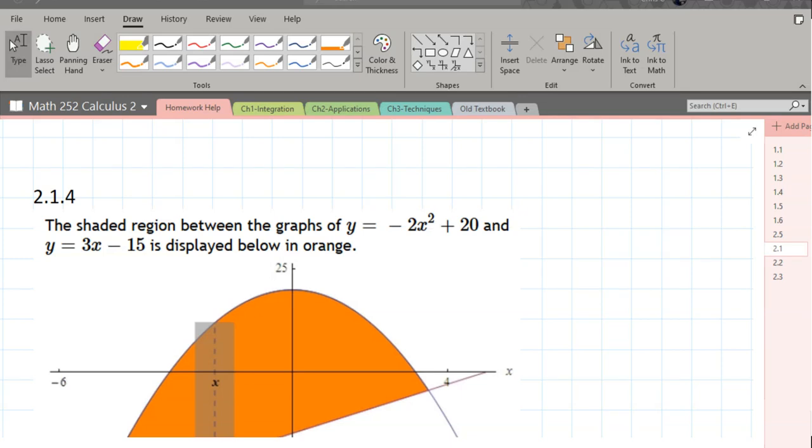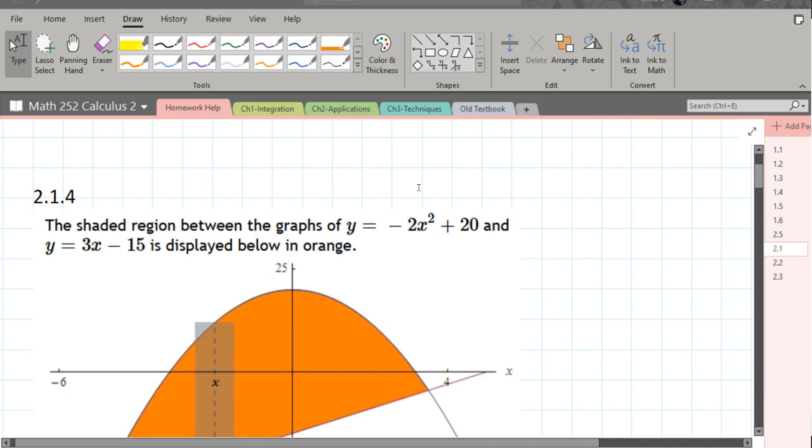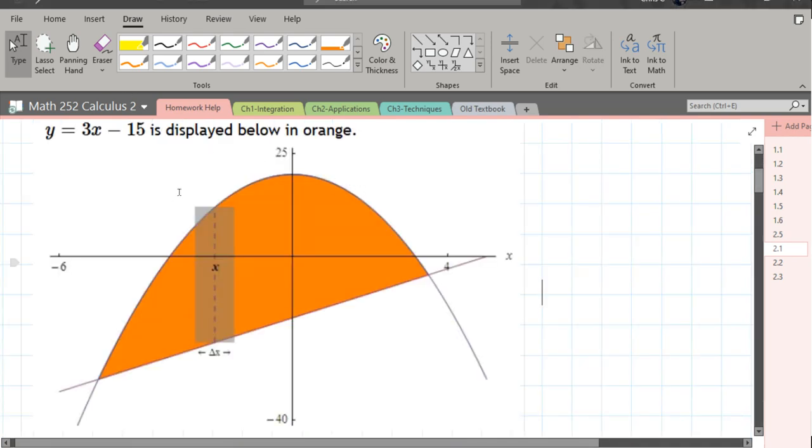We're going to look at problem 2.1.4, and this is given two equations. We want to find the area in between them. They do give us a nice graph on this one, but I want to do this problem without using this graph here.